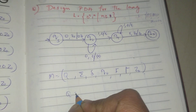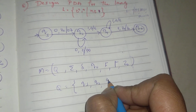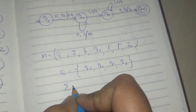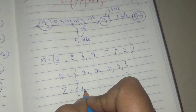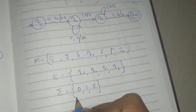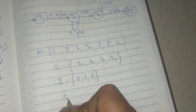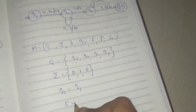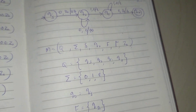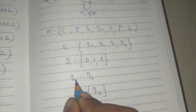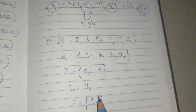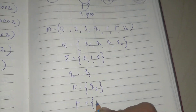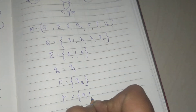So Q is the set of states, where Q contains: Qs, Q0, Q1, Q2. Sigma is the input alphabet, where input is simply 0, 1, and Epsilon. Gamma is the stack alphabet. Then Q0 is the starting state, which is equal to Qs. F is the final state — even if we set any final state, let's get the initial state. The stack alphabet contains 0, 1, and Z0. The bottom of the stack is Z0. So this is the tuple definition.